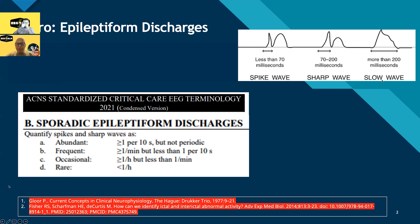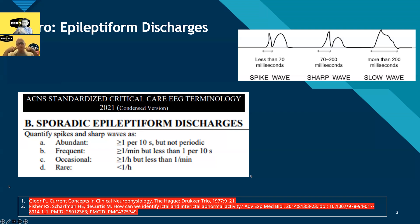We also talk about how frequently they occur. Abundant is more than one every 10 seconds, but not periodic. Frequent means at least one per minute, but not one every 10 seconds. Occasional is at least one per hour, but not more than one per minute. Rare is less than one per hour. These terms apply when reading EEGs longer than 10 seconds — we're talking about sporadic epileptiform discharges, occurring at random intervals, as distinct from periodic ones that occur at very regular intervals.